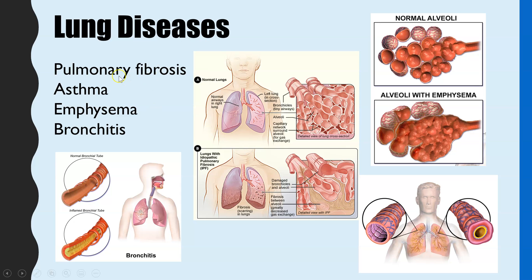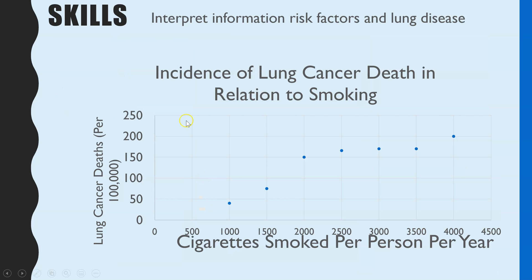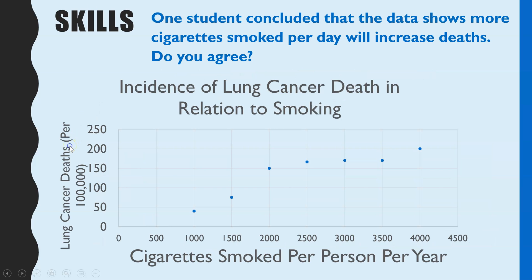You wouldn't need to know that information off by heart, but you could be given a picture and be asked to suggest why it reduces gas exchange, or maybe you'd be given data. The last thing is data questions where you might have to interpret information looking at risk factors and lung disease — specifically smoking and lung disease, or air pollution and lung disease. You could then have to look at a graph or a table to answer particular questions.